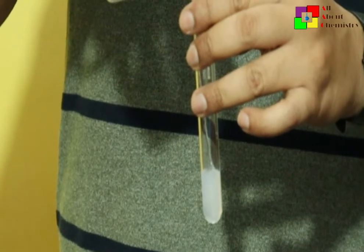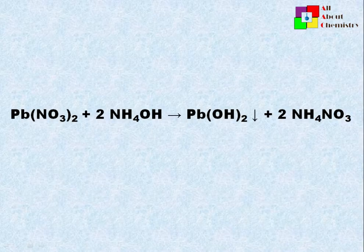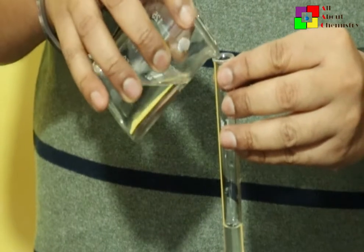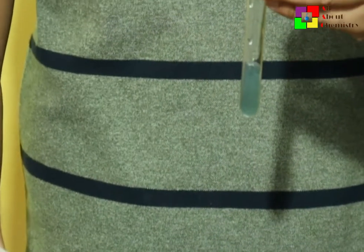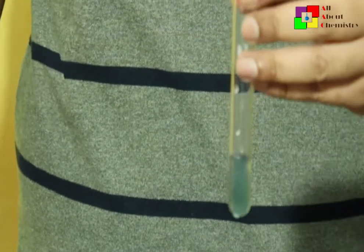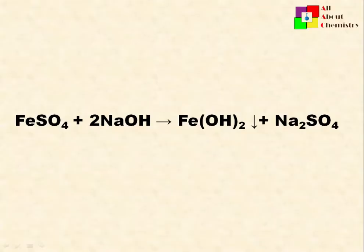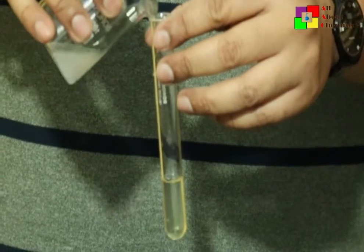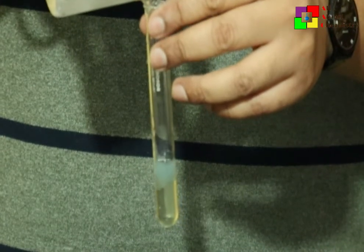Moving to ferrous salt — when ferrous salts are treated with sodium hydroxide solution, we get a dirty green precipitation which is insoluble in excess sodium hydroxide. This dirty green precipitation is due to the formation of Fe(OH)₂, ferrous hydroxide. The same observation is obtained when ammonium hydroxide is added.